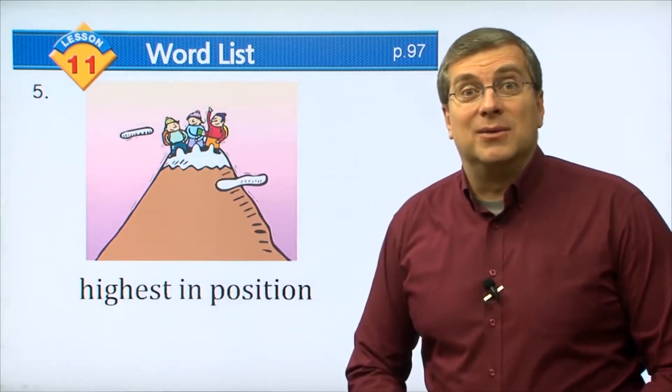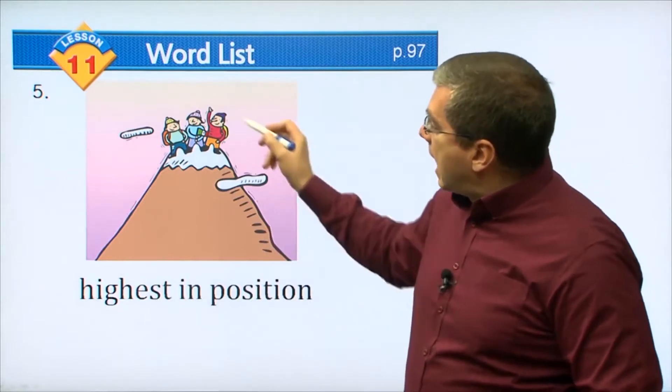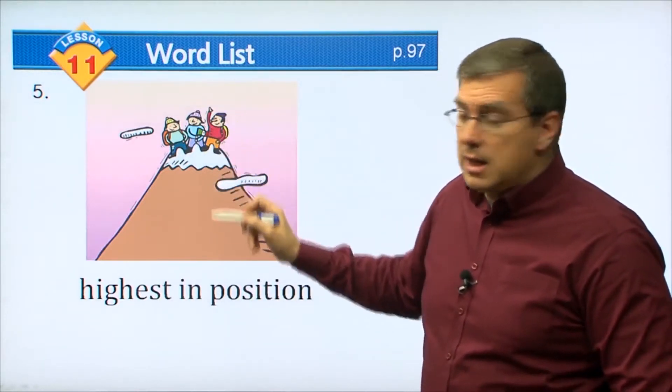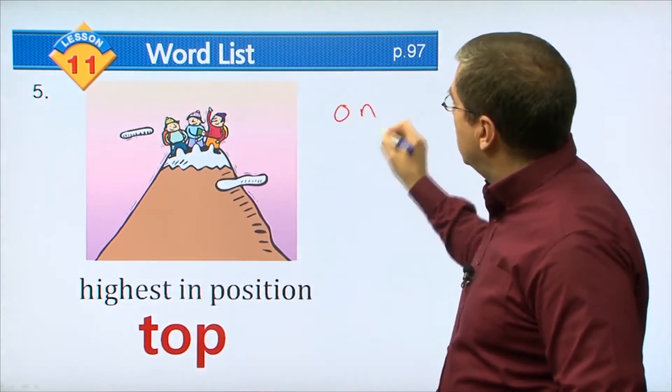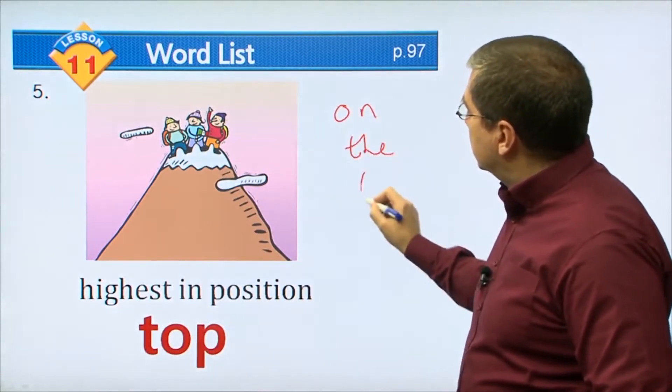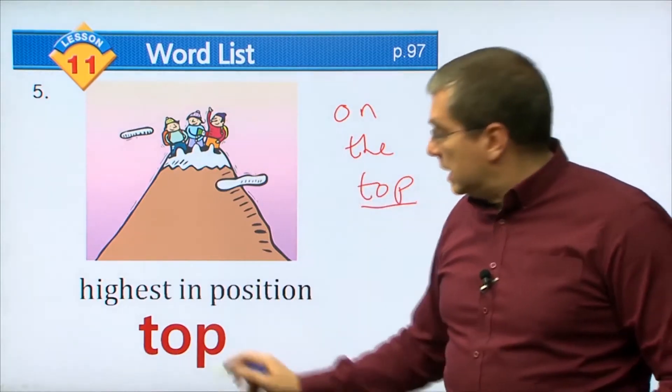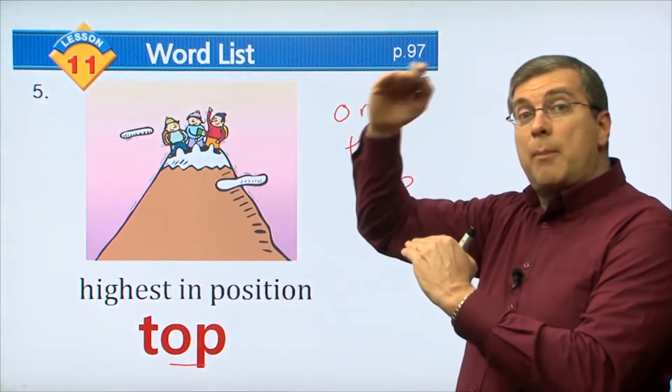Next word. Look at these guys, they're having fun. They were hiking all day and now they're at the highest position in the mountains. Where are they? They are on the top. They are on the top of the mountain. So top is the highest in position, the thing that is on top.